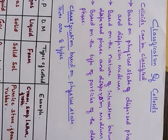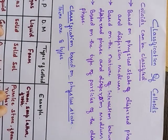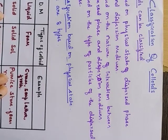Colloidal particles can pass through filter paper but not through an animal membrane, and cannot be differentiated by the naked eye but can be observed under an ultra microscope. Examples of colloids include protein, starch, milk, cheese, butter, gemstones, and jellies. Classification of colloids can be done based on three types.